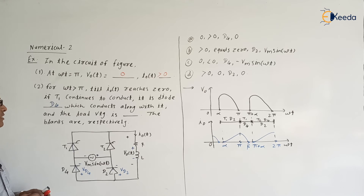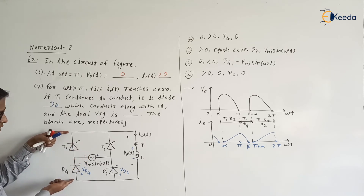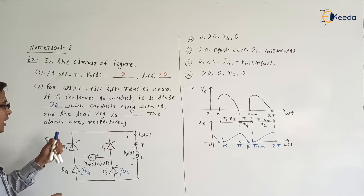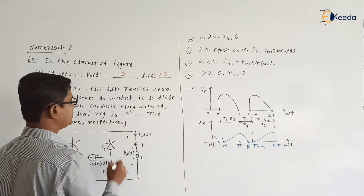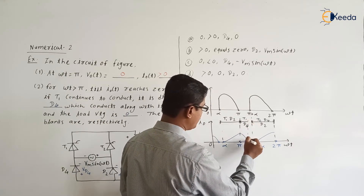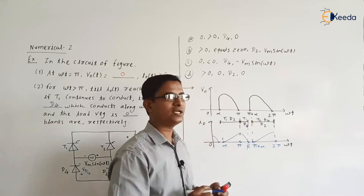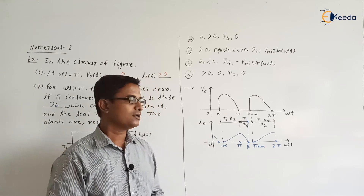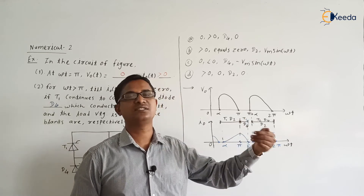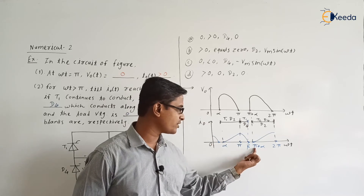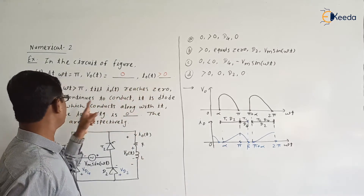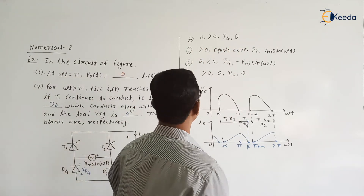The load voltage during this interval — when T1 and D4 are both on — is zero, because the voltage across conducting switches equals zero. The inductor releases its energy through T1 and D4, and before the gate signal is applied to thyristor T2, the inductor energy becomes zero at beta. So the answers are: I0 greater than zero, D4, and load voltage zero. The correct answer is option A.